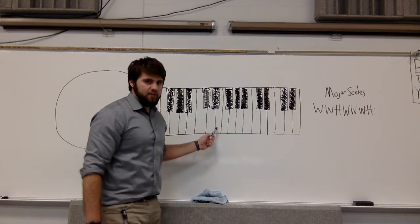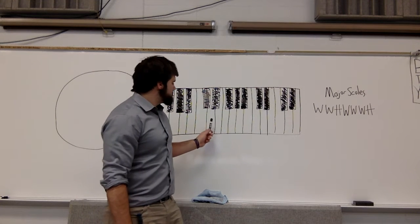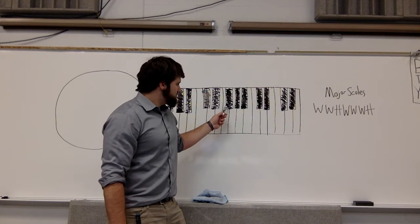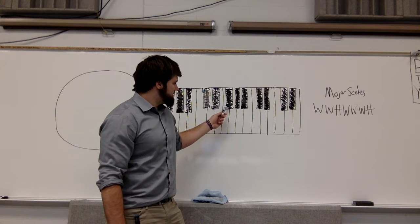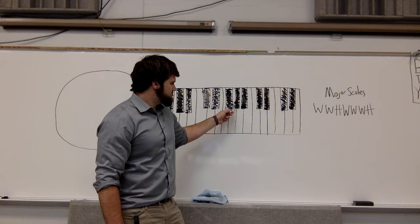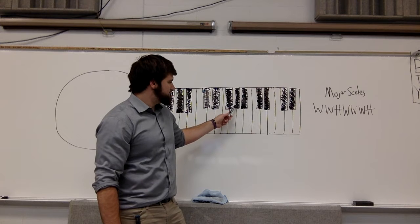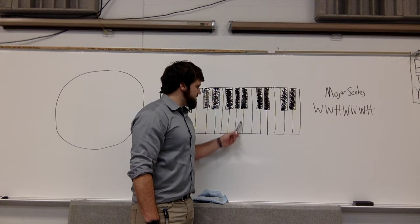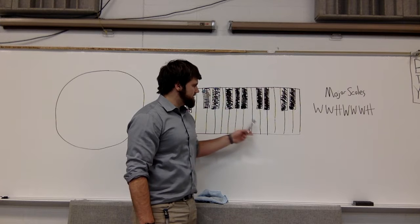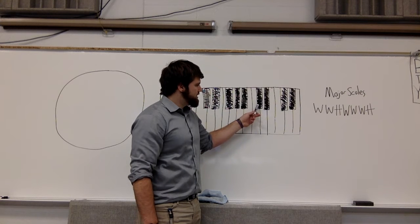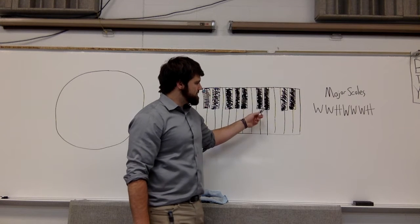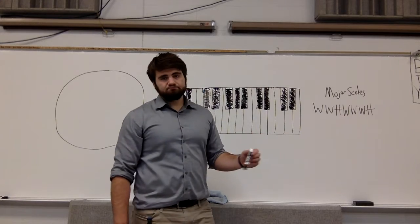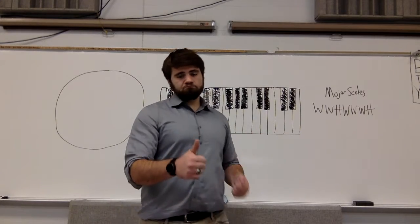We're starting at E. This is E. Go up a whole step — one, two. Go up another whole step to get note three — one, two. Now this is a half step — note four. Then we go up another whole step, another whole step, another whole step, and then we do a half step. There you go, from E to E.